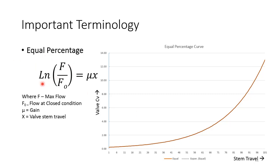The formula for equal percentage is: ln(F/F₀) = μ × x, where F is maximum flow, F₀ is flow at closed condition, μ (mu) is the gain, and x is the valve stem travel. Gain means at every percentage increment of the valve stem, the gain of the flow — normally 2%, 3%, or 4%. Typically it is around 3–4%. As the valve opens, flow remains very low and rises sharply after 80% travel.